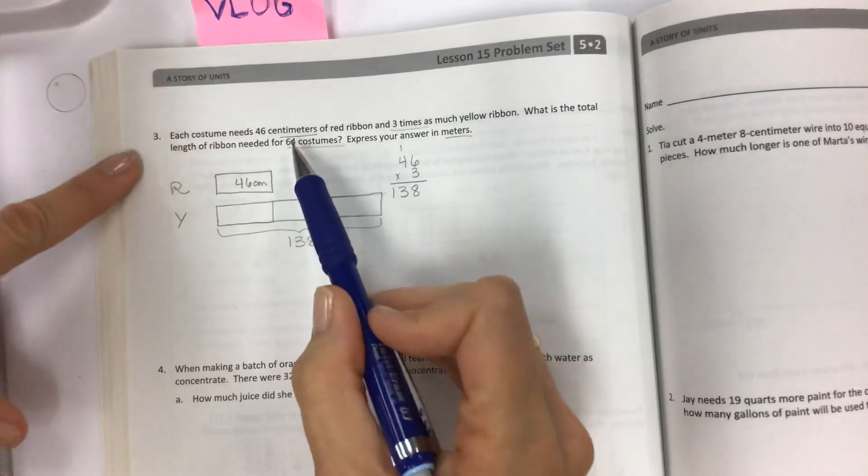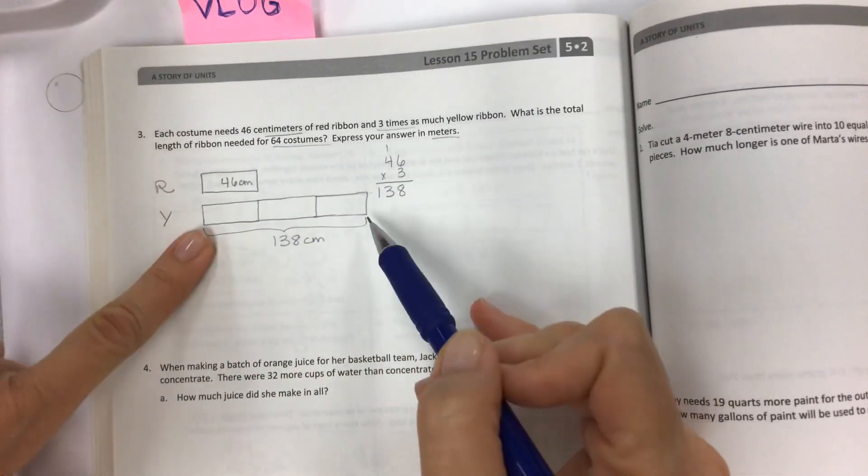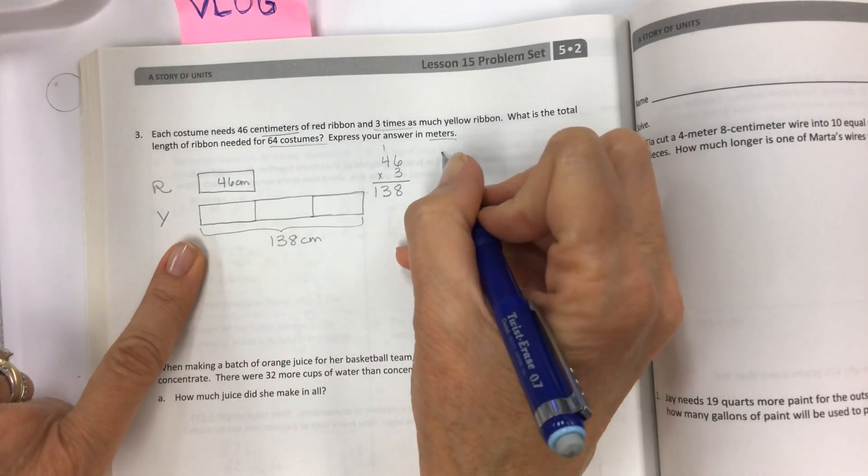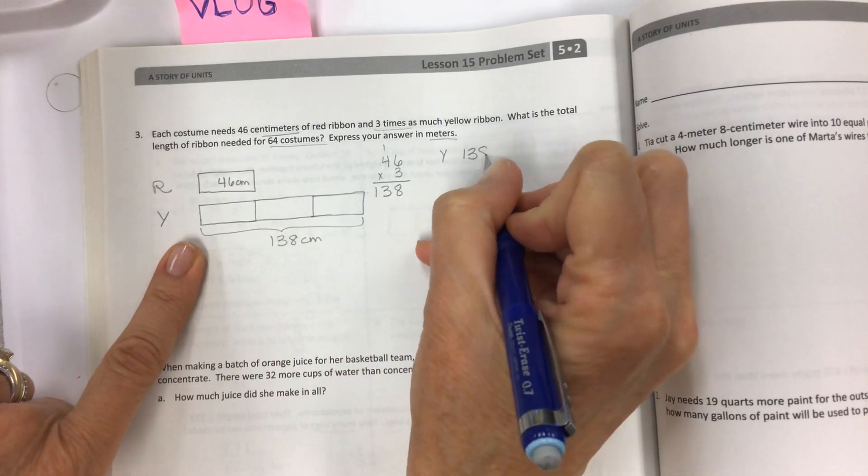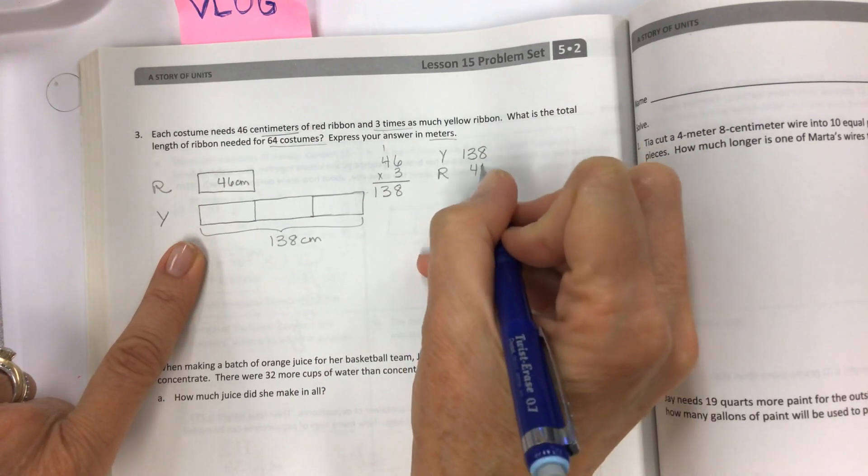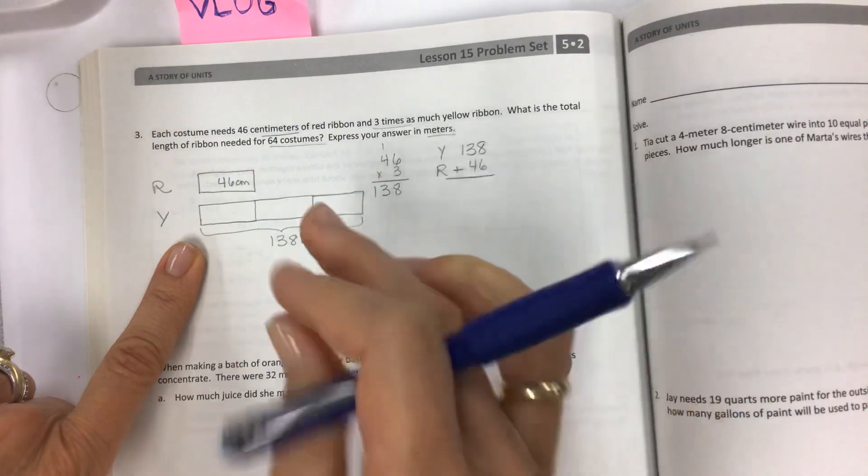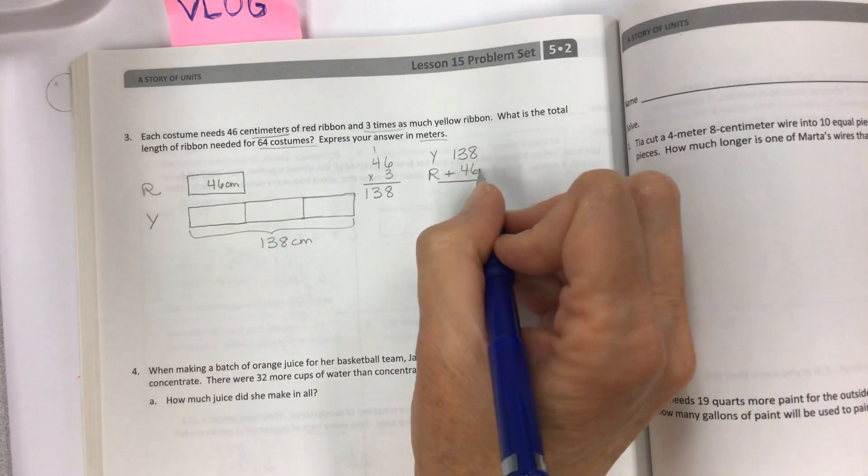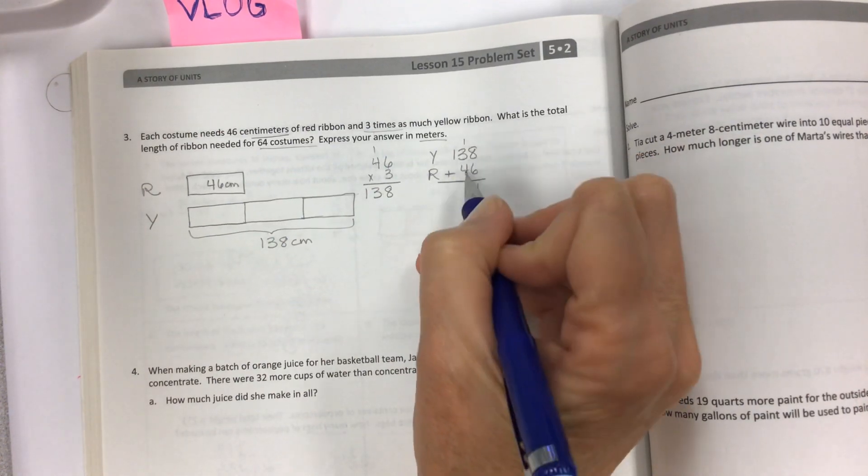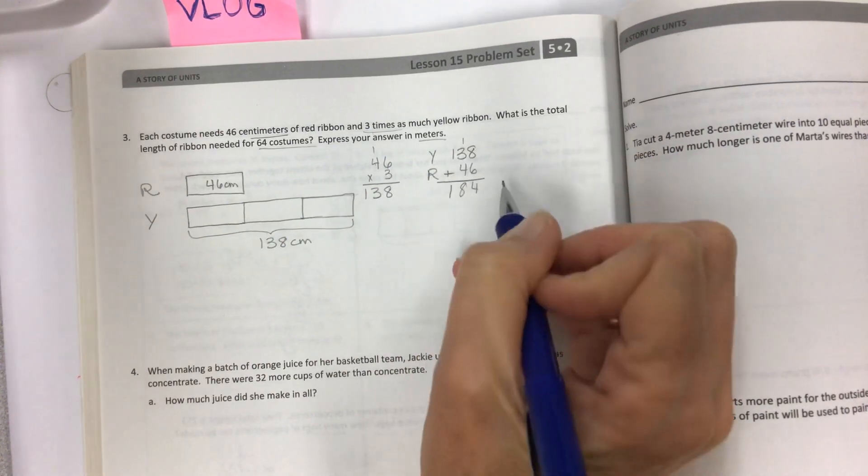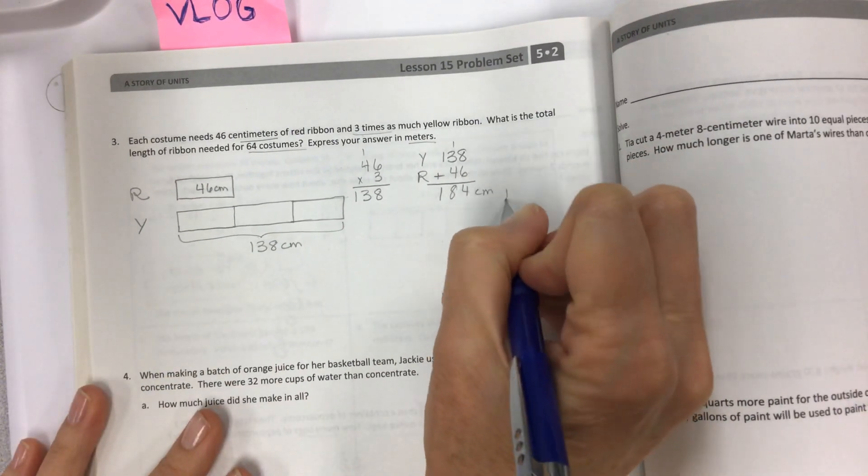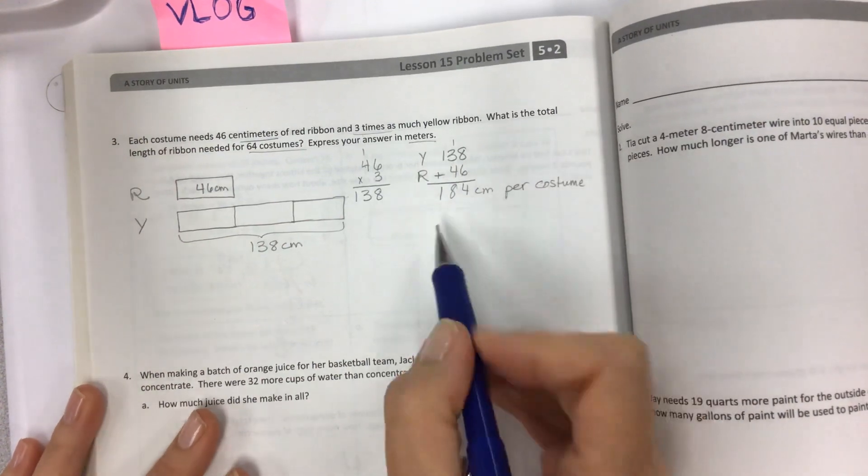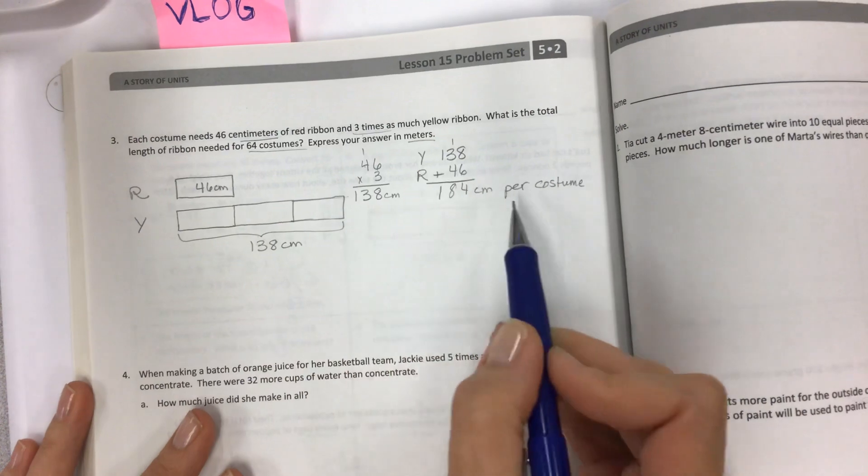So back to the problem. What is the total length of ribbon? I still haven't put those together. So now that I know yellow is 138 and I have red is 46, I can put those together to find the total length of ribbon for one costume. And this is just addition. Don't get stuck multiplying. 8 plus 6 is 14, and then 8 and then 184 centimeters per costume. Labeling all the way so you know what you're finding out as you go.